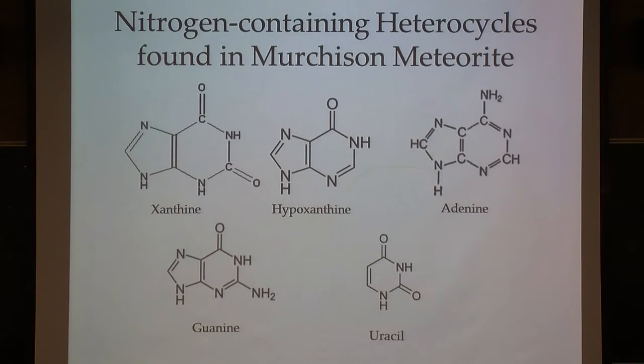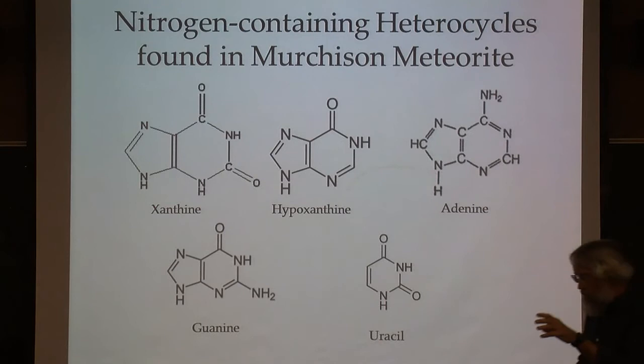Among the nitrogen heterocycles found in the Murchison meteorite are xanthine and hypoxanthine, and more significantly, adenine, guanine, and uracil. These last three are all part of nucleic acids in life forms on Earth. Adenine and guanine are found in both RNA and DNA, and uracil is found only in RNA. So molecules that we associate with living organisms on Earth have been found in these meteorites.